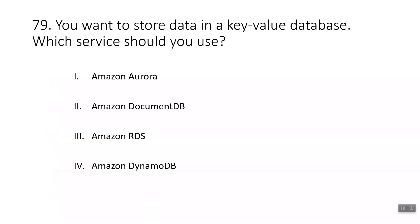Question seventy-nine: you want to store data in a key-value database. Which service should you use? Amazon DynamoDB is the answer — it is a key-value database service. Amazon RDS and Amazon Aurora use SQL to store and query data, so they are not key-value databases. Amazon DocumentDB is a document database service that supports MongoDB workloads.